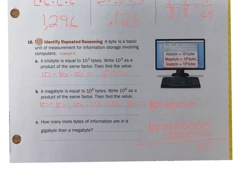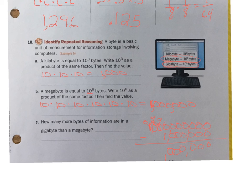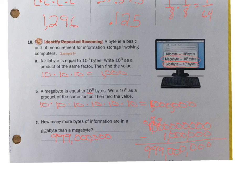Doing the subtraction: 1,000,000,000 minus 1,000,000. We need to borrow — that becomes a 0, that becomes a 10, that becomes a 9, that becomes a 10, that becomes a 9, that becomes a 10. So 10 minus 1 is 9, 9, 9, and then 0, 0, 0, 0, 0, 0. So how many more bytes of information? 999,000,000 — that's 999 million more bytes.